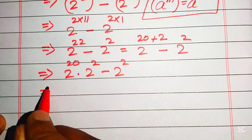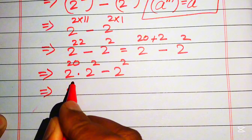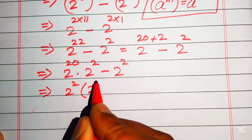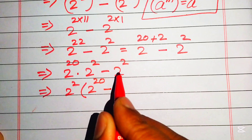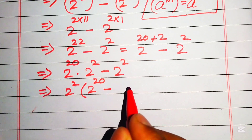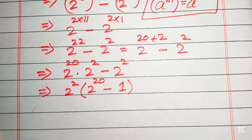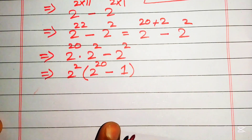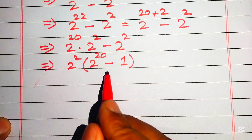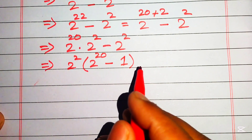Here you see that 2 squared is the common term. We take out 2 squared as a common factor. The remaining terms give us 2 to the power of 20 minus 1. So we now need to simplify the expression 2 squared times the quantity 2 to the power of 20 minus 1.